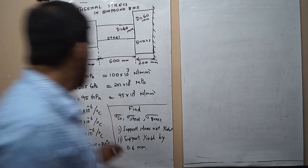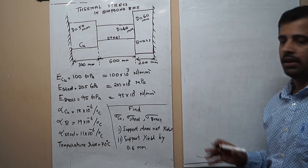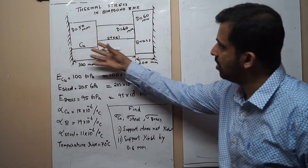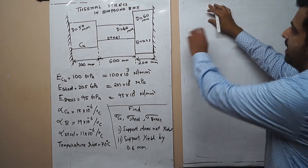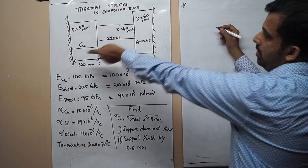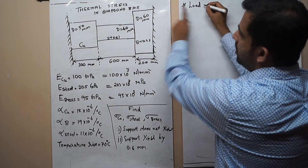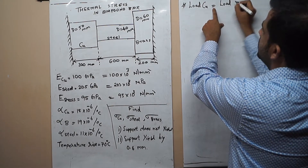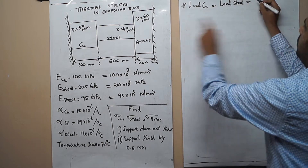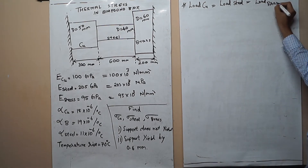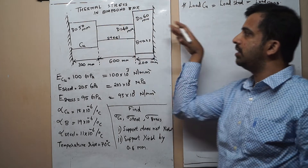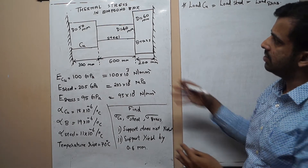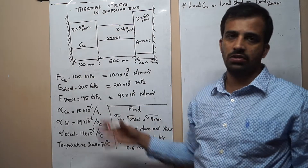Before proceeding, one important point about a compound bar: the load acting on all three parts — copper, steel, and brass — will be the same. So the load on the copper side equals the load on the steel side, which equals the load on the brass side, because whatever load acts on this compound bar is equally distributed among all three sections.